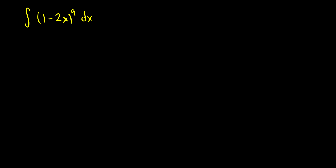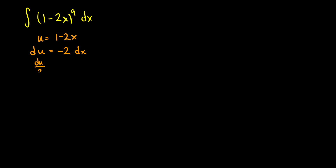Here we have the integral of (1 − 2x)^9 dx. Usually what we do is look for the inner function and pick that as u. So we pick u = 1 − 2x. Taking the derivative, du = −2 dx. Now we have a problem because I see dx in the integral but no −2 anywhere. So we solve for dx: dx = −du/2.